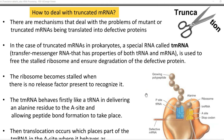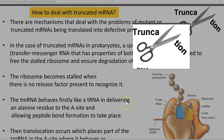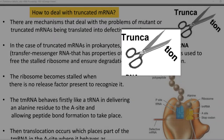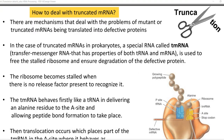We look at the steps that commonly occur for managing a truncated mRNA during the process of protein synthesis. Truncated mRNA refers to a broken mRNA. There are several mechanisms that deal with the problems of mutant or truncated mRNAs in the cell system, as truncated mRNA can cause translation and formation of defective proteins.